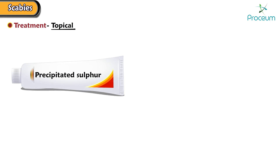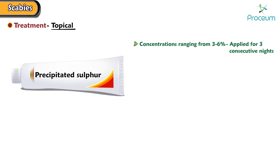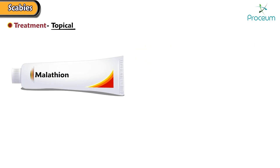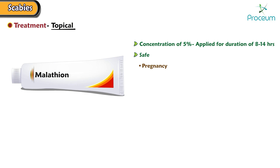Next, precipitated sulfur. At concentrations ranging from 3% to 6%, it's typically applied for three consecutive nights. It is considered safe for use during pregnancy and lactation. Lastly, malathion. Available at a concentration of 5%, it's typically applied for a duration of 8 to 14 hours. It's considered safe for use during pregnancy. However, it is not considered safe for children and infants.